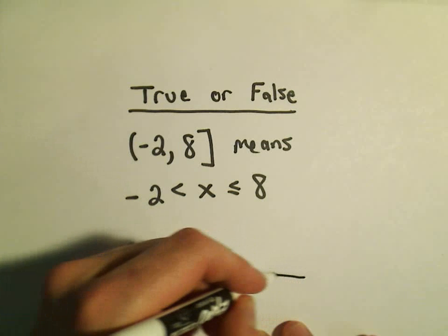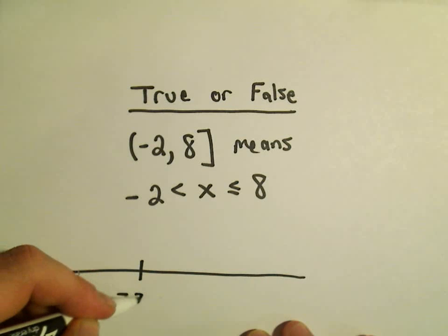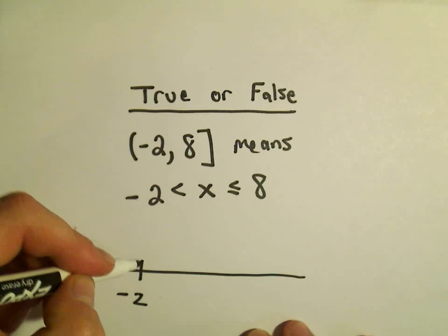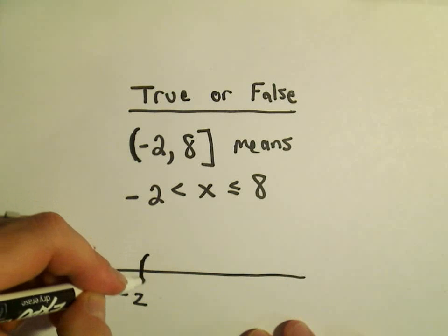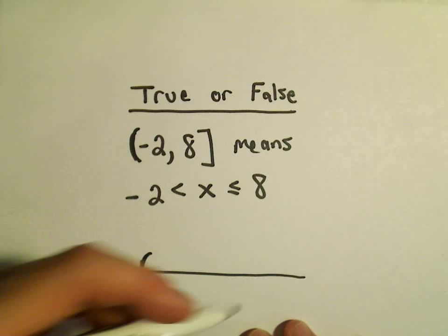And you know, sometimes what I do is I like to make a little number line. So here is negative 2, and since it's a parentheses, remember that means we don't include it. So I'm going to put a parentheses, or sometimes people will put an open circle.